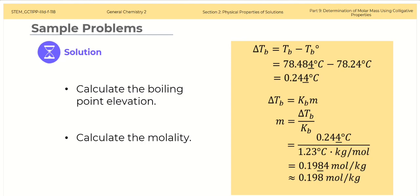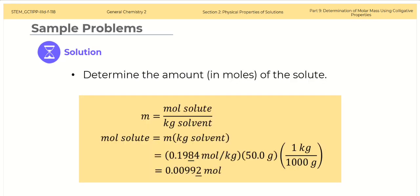The boiling point of ethanol is a value obtained from the literature and not from the experiment, so it should not be the basis for the number of significant figures. Next, calculate the molality from the boiling point elevation and the Kb value. Plugging in the values, we obtain 0.198 moles per kilogram.